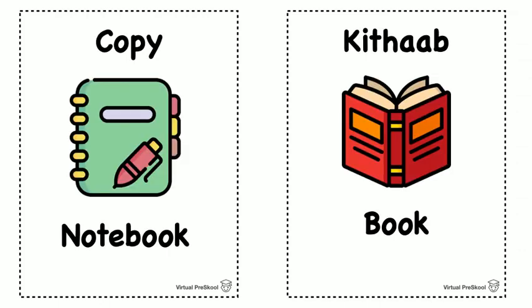Kopi. Kopi is what people call a notebook, or students call a notebook in Hindi. So it's not 'copy' like how we say 'can you make a copy of this paper.' They say kopi. Kitab is book. So again, kopi is notebook, kitab is book.